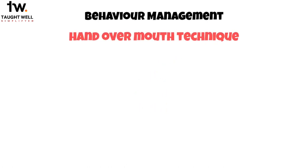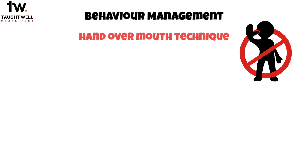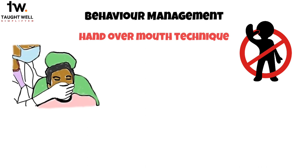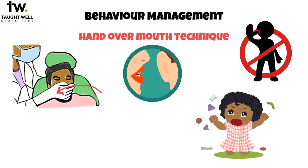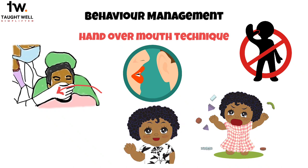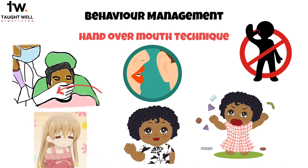Please don't use the hand over mouth technique frequently — it's not a good experience for the child. The question is testing your knowledge about the HOME technique. The hand over mouth exercise involves the dentist firmly placing their hand over the child's mouth while calmly explaining behavioral expectations close to the child's ear. The dentist continues this until the child's verbal outburst comes to a complete stop and the child signals a willingness to cooperate.